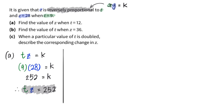For part a, find the value of z when t equals 12. That means I substitute t as 12: 12 times z equals 252. So I find z by computing 252 divided by 12, which gives a value of 21.